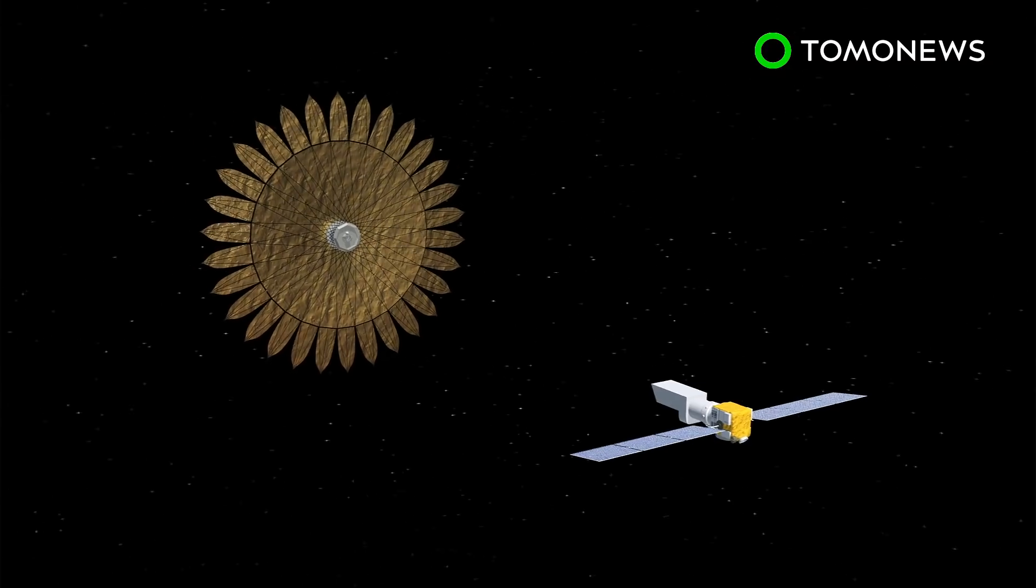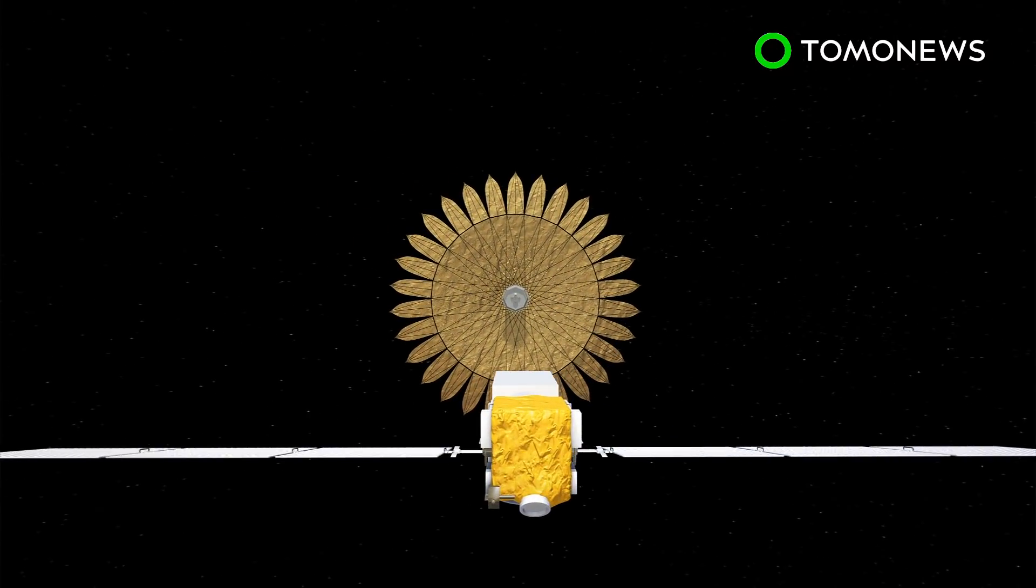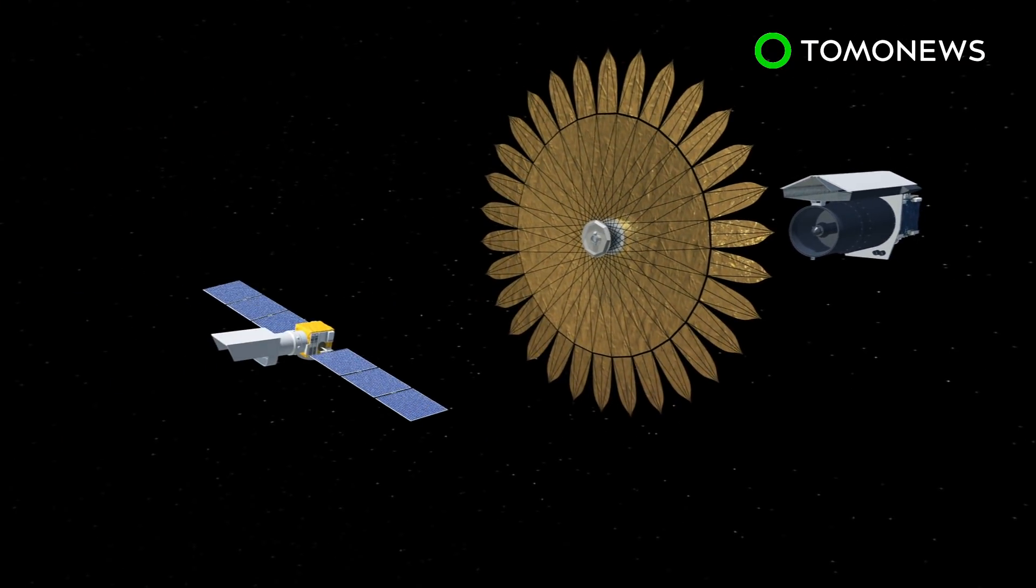The spacecraft carrying the starshade would fly 40,000 kilometers in front of the planet hunting telescope. However, this technology would only work if the two spacecraft are aligned to within one meter of each other. If there's a greater distance between the two, this would allow light from stars to seep into the space telescope's view.